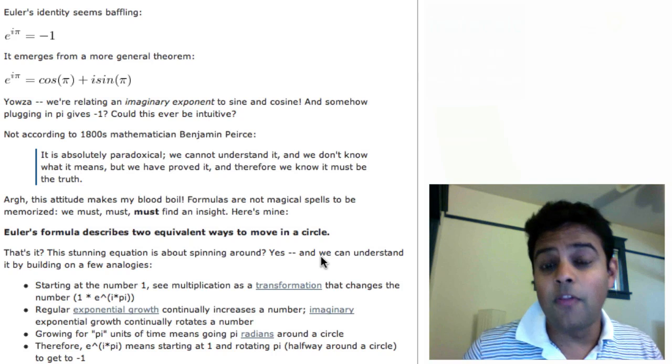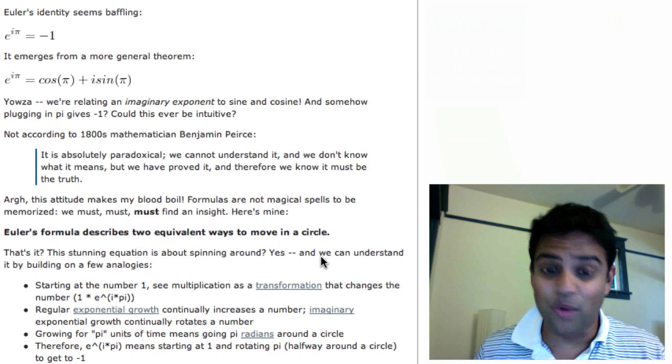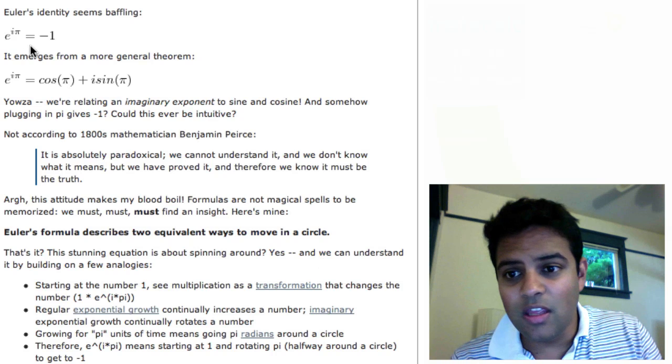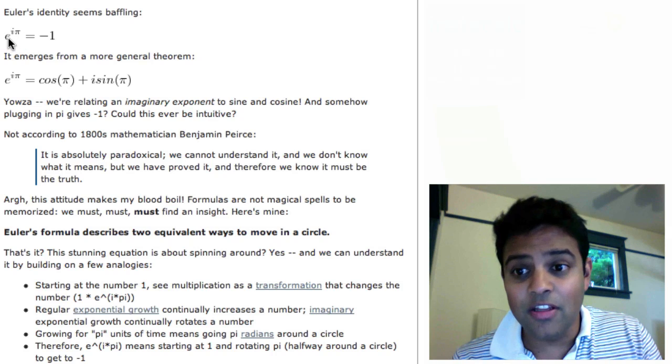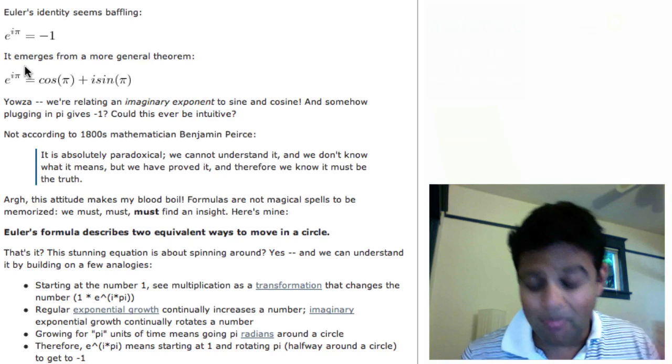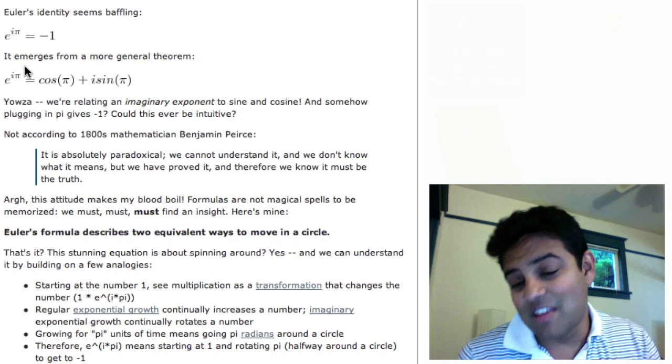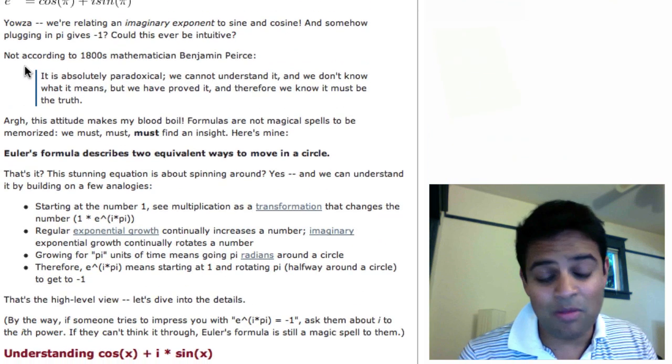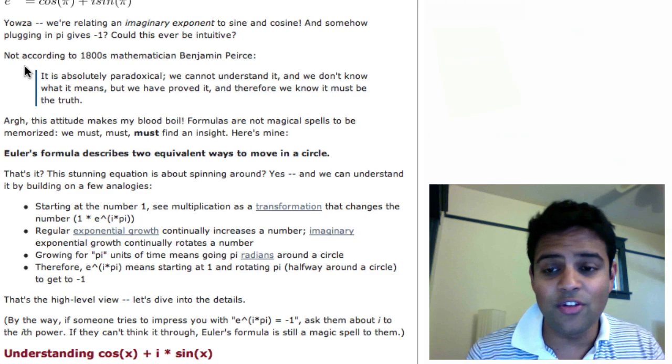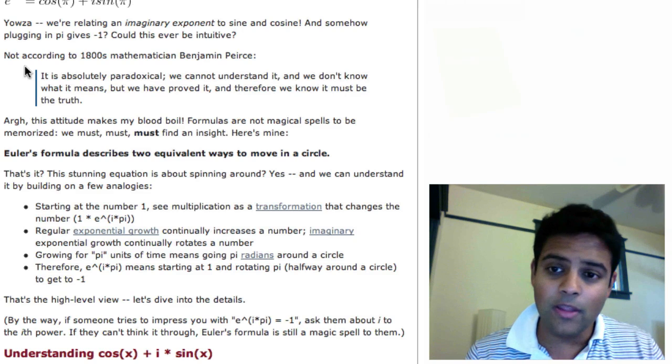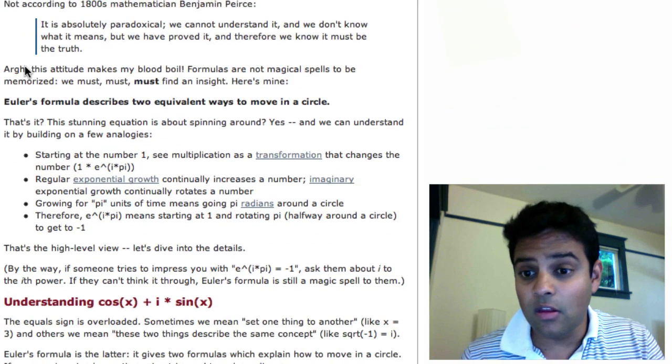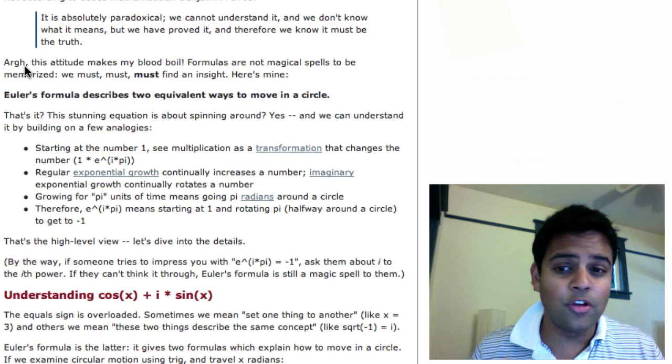So just at a high level, this is about Euler's Theorem, which is one of the most famous ones in math. It gives rise to this identity, e to the i pi equals negative 1, and that just seems mind-boggling. And in fact, it did boggle a lot of minds back in the day. People thought that it would just be impossible to understand intuitively. But really, there is a way to look at it that makes it make sense.